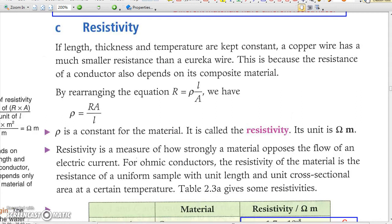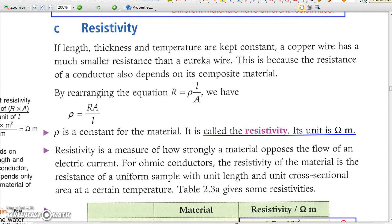See, resistivity. Different materials have different molecular structure and arrangement. Hence, even at the same temperature and with the same dimensions, their resistance are not the same. In other words, different materials have different resistivities, just like they have different densities. Mathematically, R equals rho L over A.